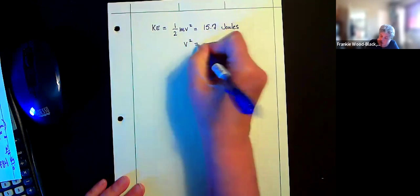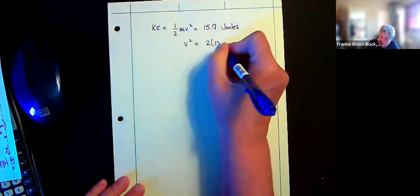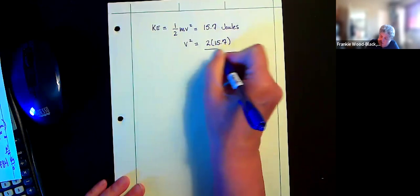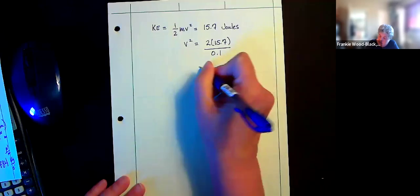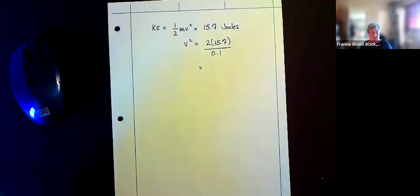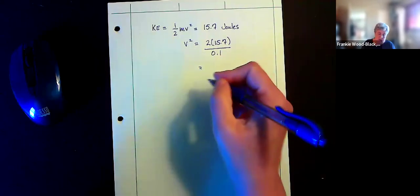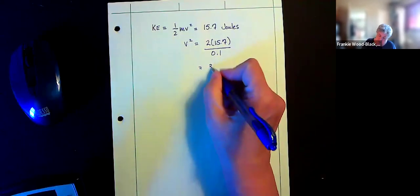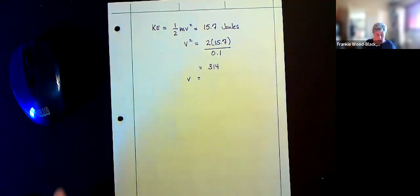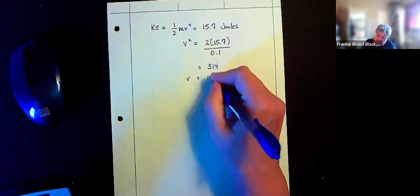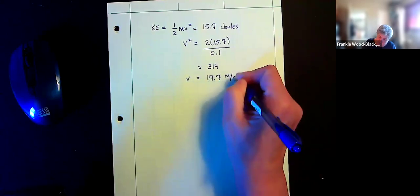So my v squared is going to equal 2 times my 15.7 divided by the mass. And we're told that the mass is 0.1. So now I've got a number that looks like gives me 314. And my velocity is going to equal 17.7 meters per second.